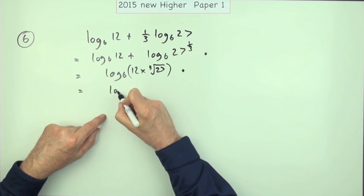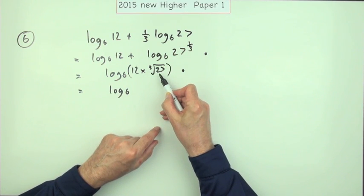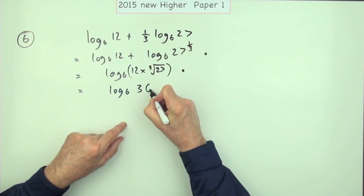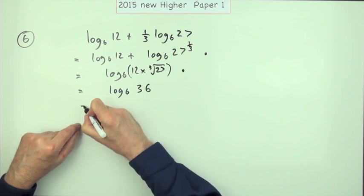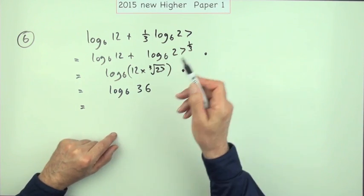Now it's just a case of working out what this comes to. Log base 6 of—now the cube root of 27 is 3, 3 times 12 is 36, you're not getting any marks for that. The last part is just for saying what power of 6 is 36: it's power 2.